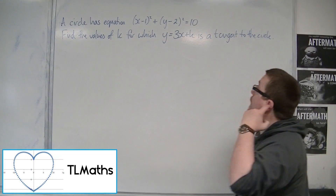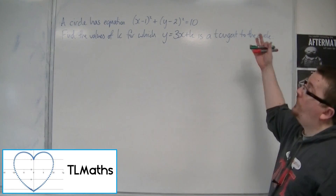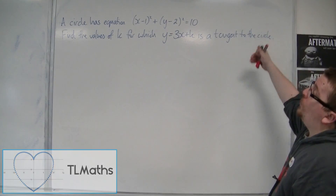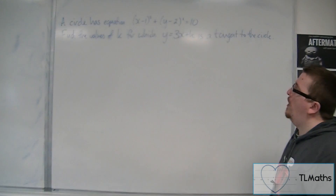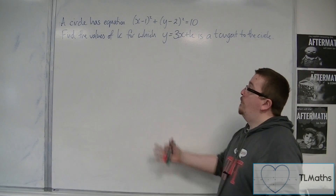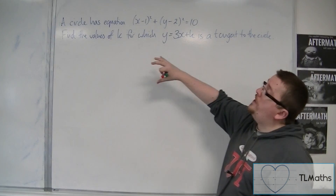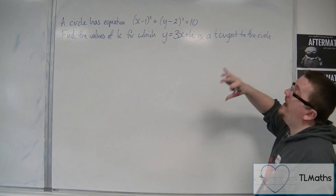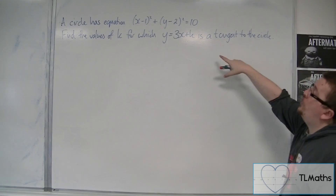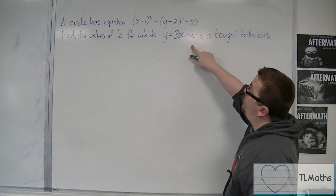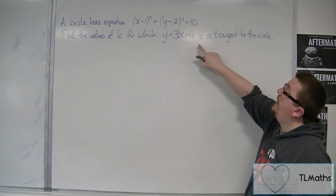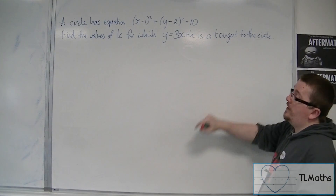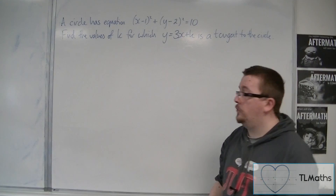In this problem we have a circle with equation (x minus 1) squared plus (y minus 2) squared equals 10. What we want to do is find the values of k for which y equals 3x plus k is a tangent to the circle.